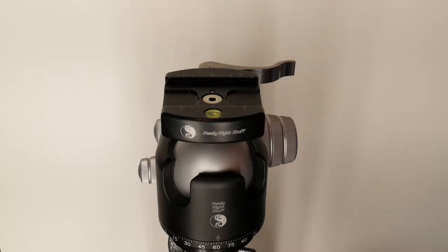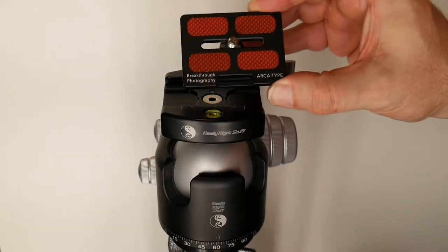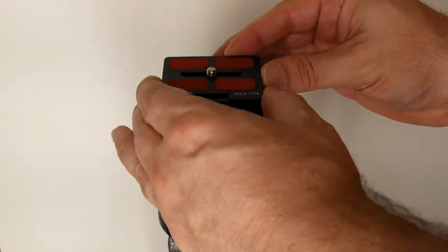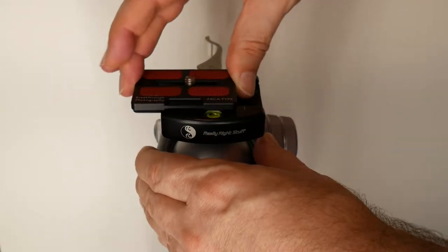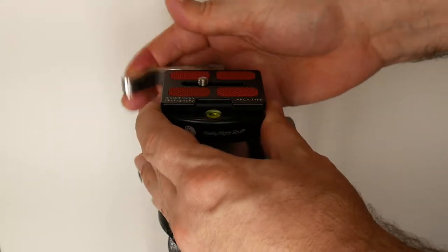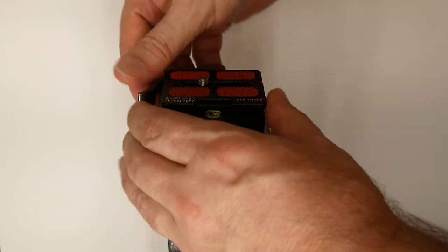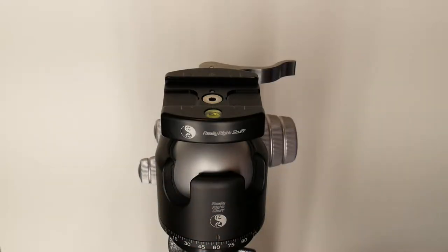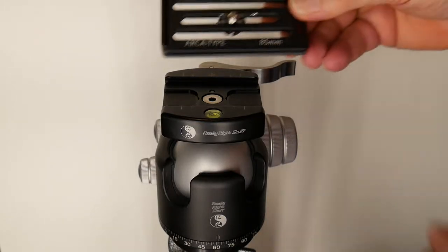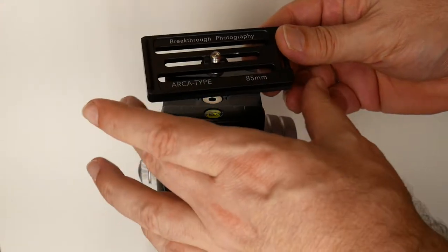And the 60 millimeter is also the same. We put it in middle position, movement but it's not going to come out. Lock it down, locked, it is solid, it's not coming out of there. So both the 40 millimeter and the 60 millimeter plate I recommend. Now the 85 millimeter, in addition to not recommending it for the really right stuff lever clamp...